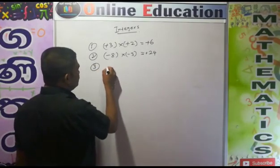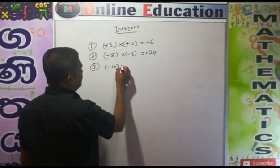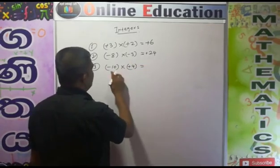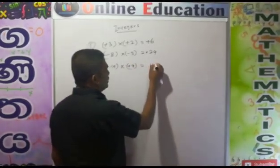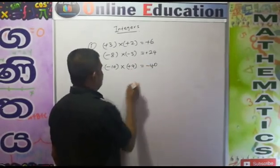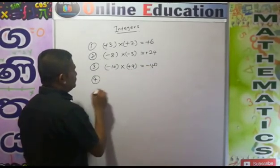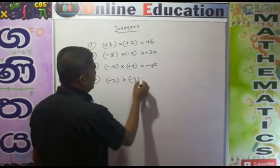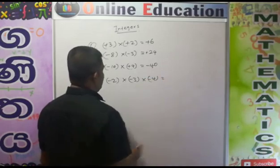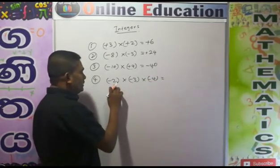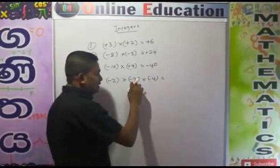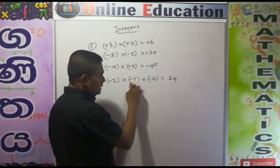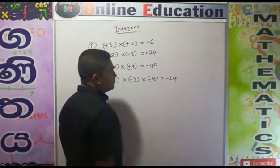Third example: minus 10 into plus 4. 10 into 4 equals 40; minus into plus equals minus. So the answer is minus 40. Fourth example: minus 2 into minus 3 into minus 4. First multiply the numbers: 2 into 3 equals 6, 6 into 4 equals 24. For the signs: minus into minus equals plus, then plus into minus equals minus. So the answer is minus 24.